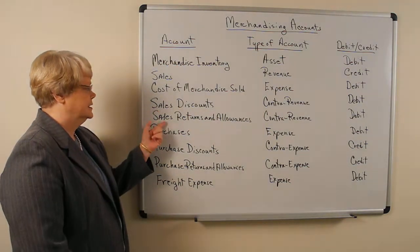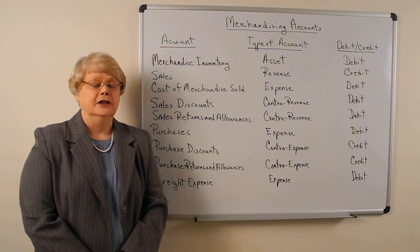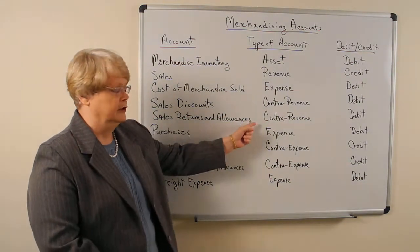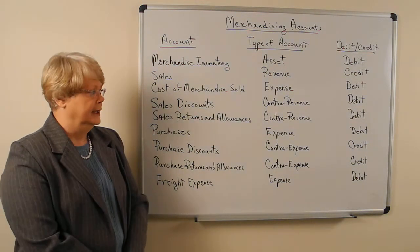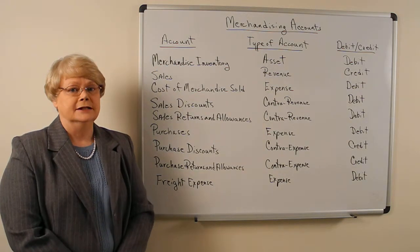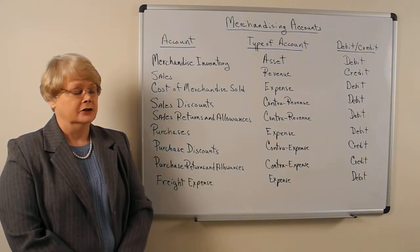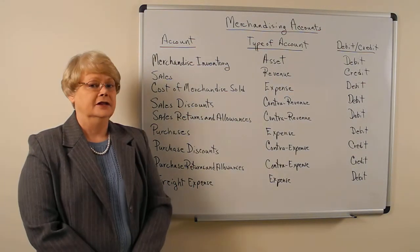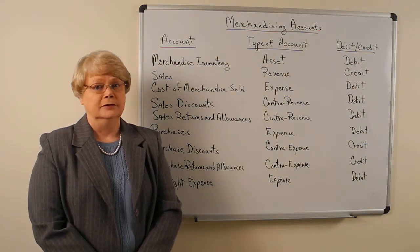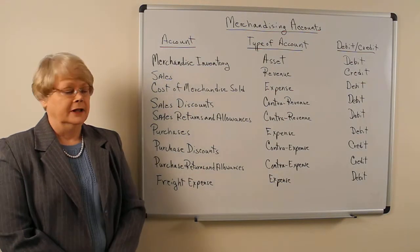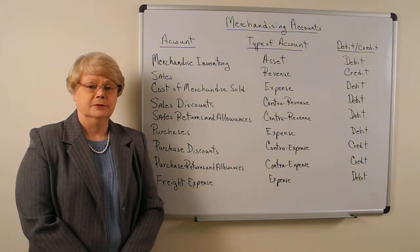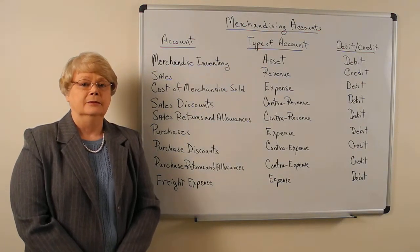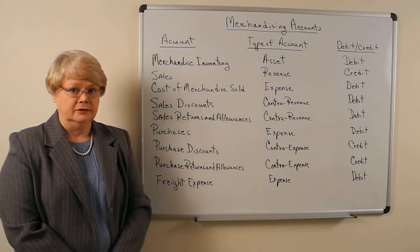Then we have sales discounts and sales returns and allowances. These are contra revenue accounts because they are offsets against the sales account, and any contra account has the opposite entry as the account that it's contra to. So therefore, these two accounts are increased with debits and have normal debit balances. If we have a discount, that's when we offer a discount to a customer for paying early. Then we will decrease our sales, but not directly — we're going to do it through this contra account.